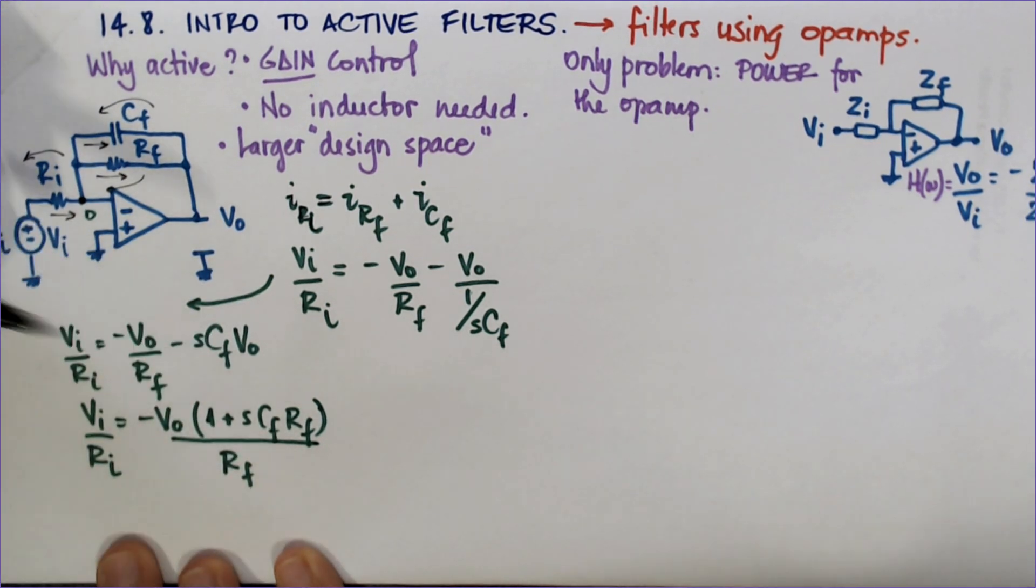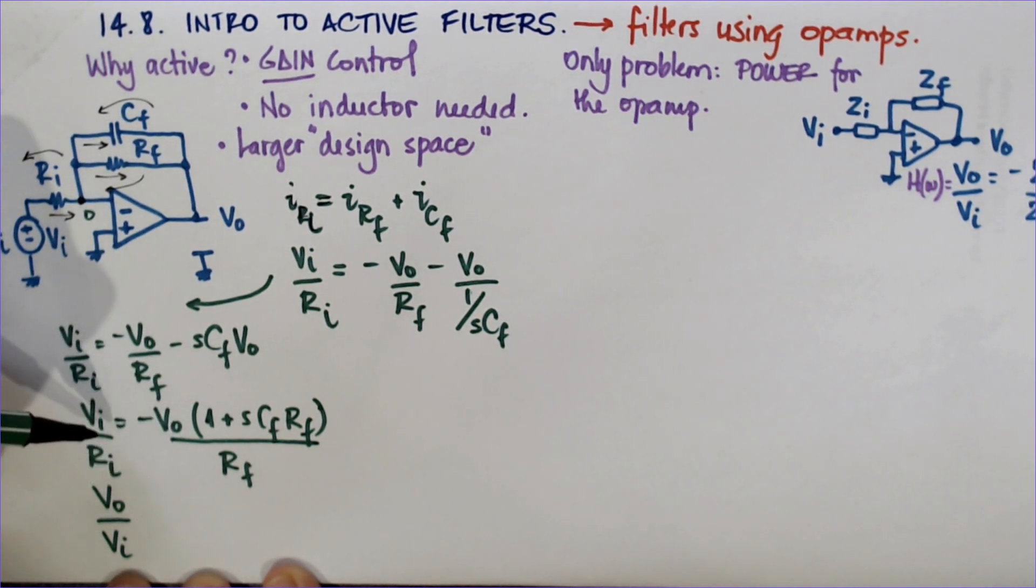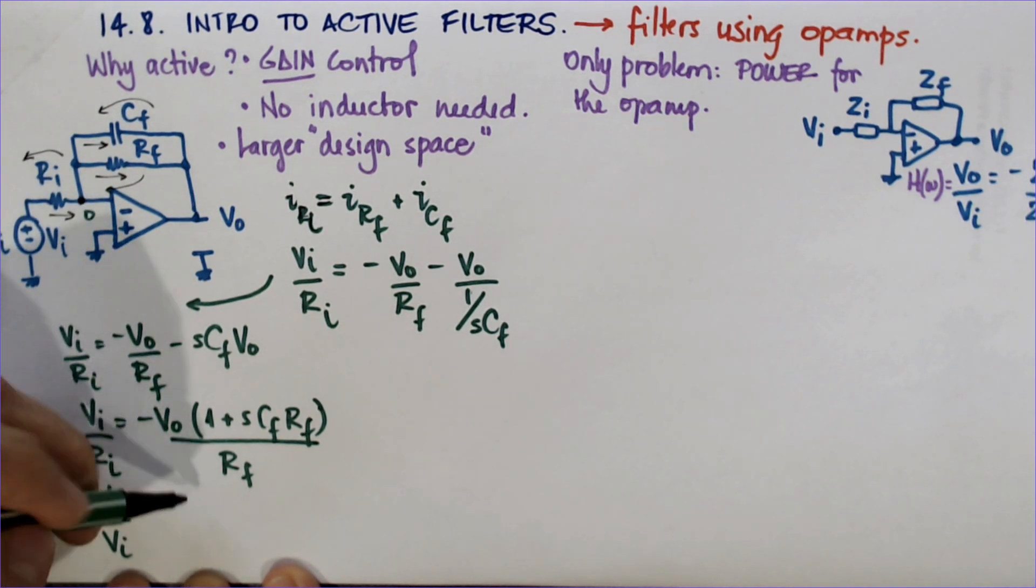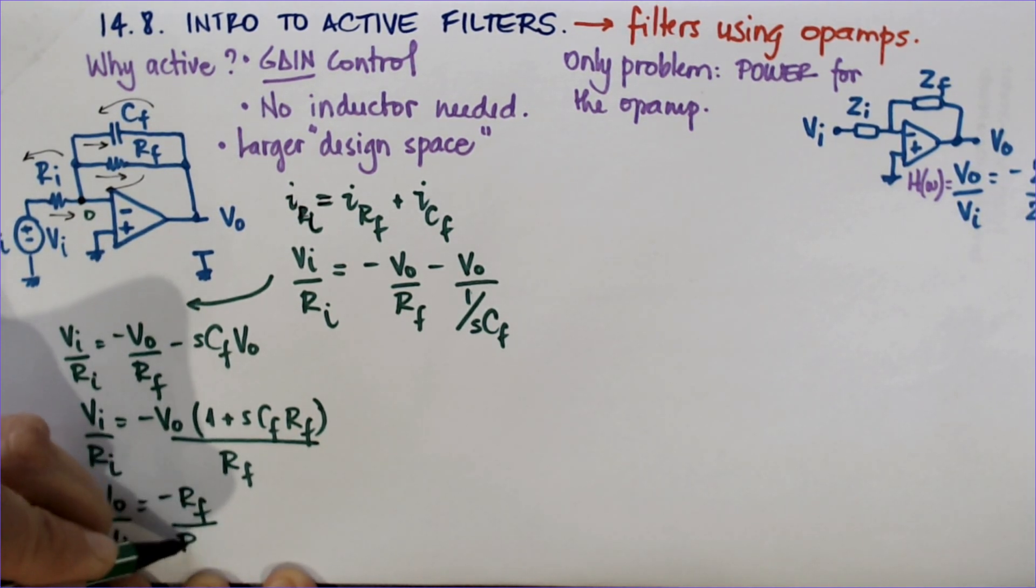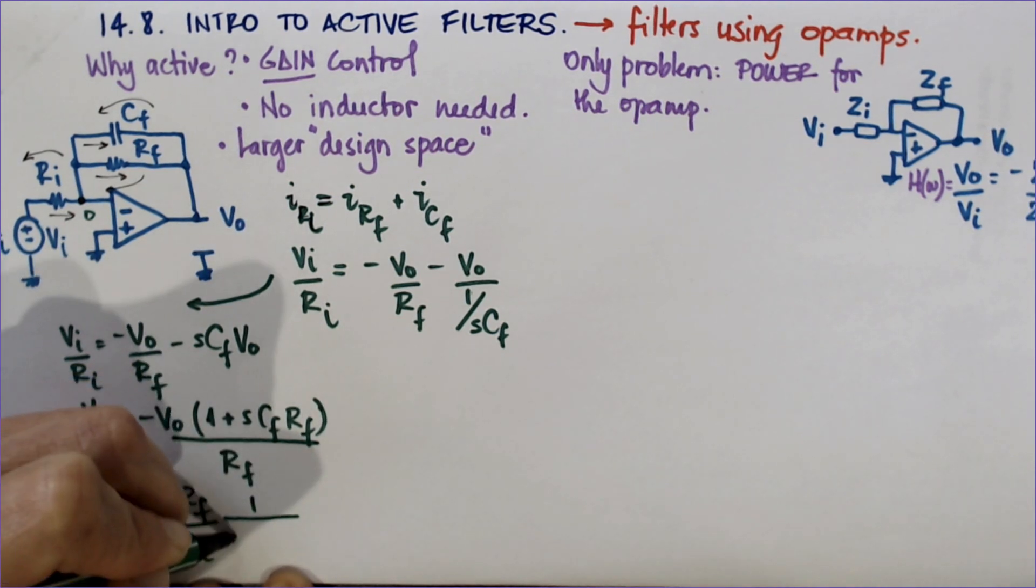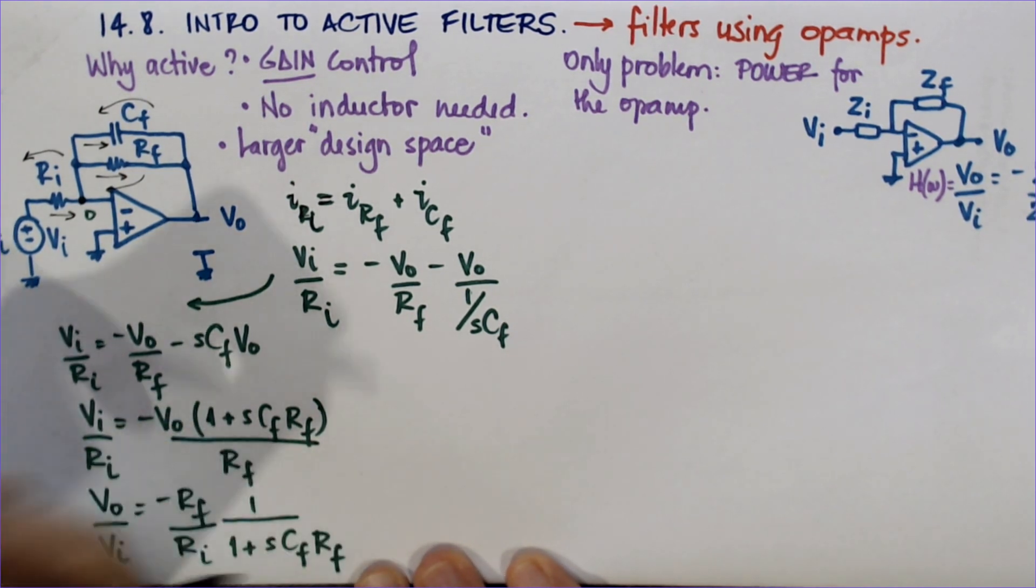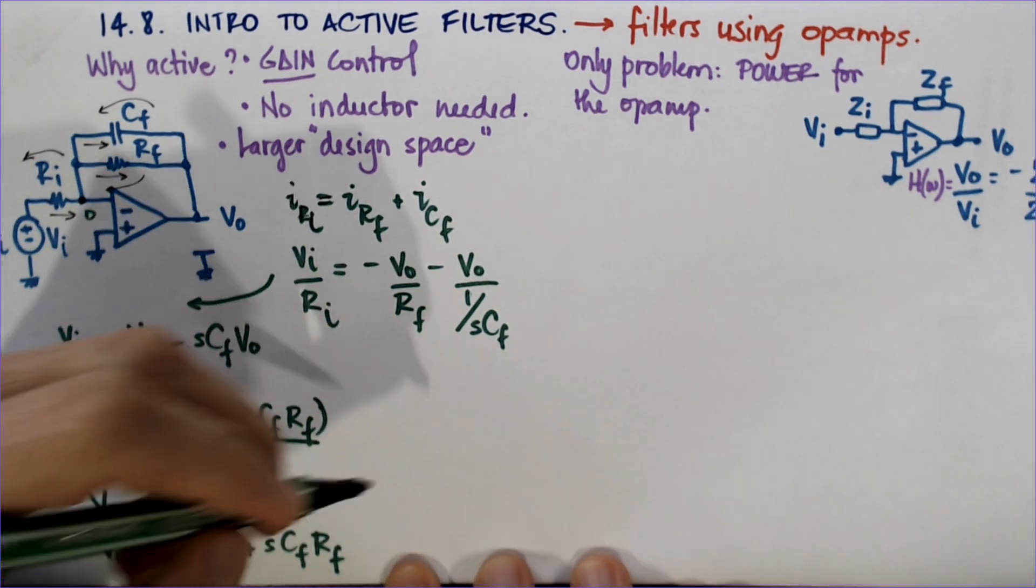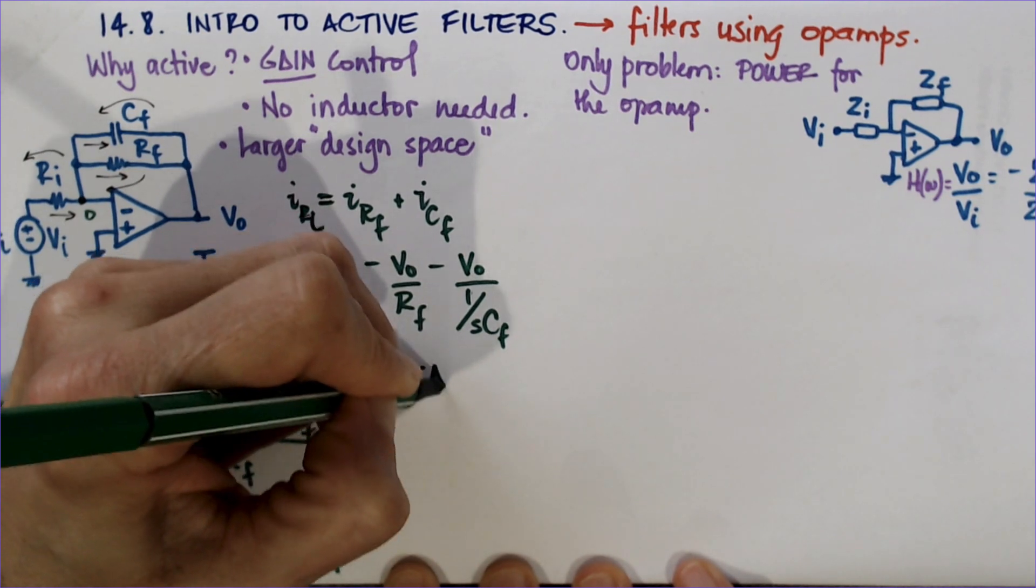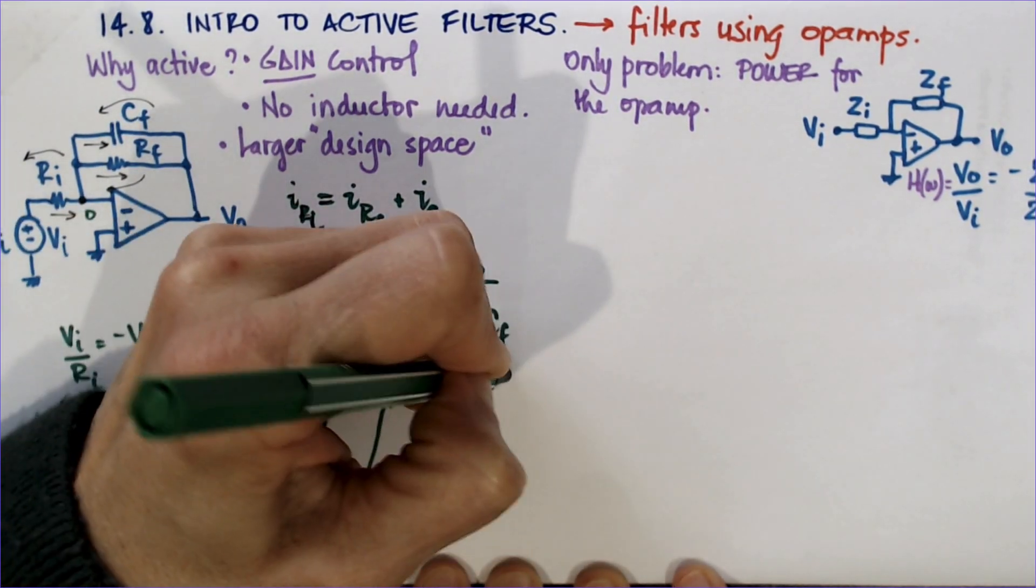And from here I'm going to keep VI over RI, VO over RF, and minus SCF VO. So I'm putting the minus VO here on the side. And I'm going to try to do VO over VI, which is really what I'm looking for, the transfer function. So if VO stays here, the output VO stays here and VI goes on the denominator. This minus is still there.